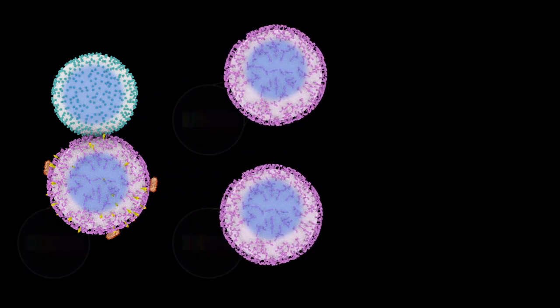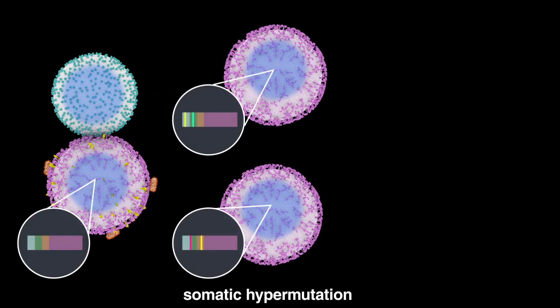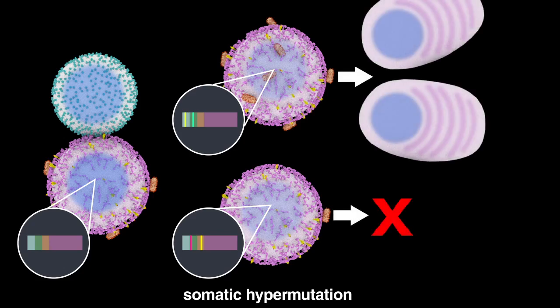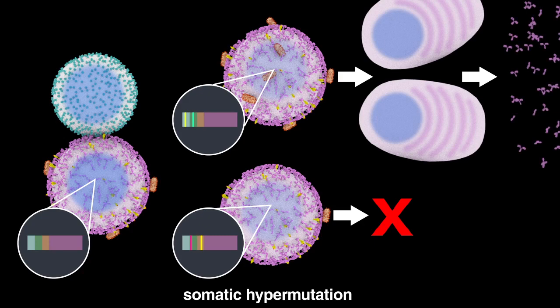Upon antigen binding, B-cells can be induced to produce additional antibody variation through a process called somatic hypermutation, where the DNA sequences that code for the antibody's variable regions can rapidly mutate. Antibodies with higher affinity cause further B-cell activation which results in the selection and production of highly specific antibodies to the antigen in question.